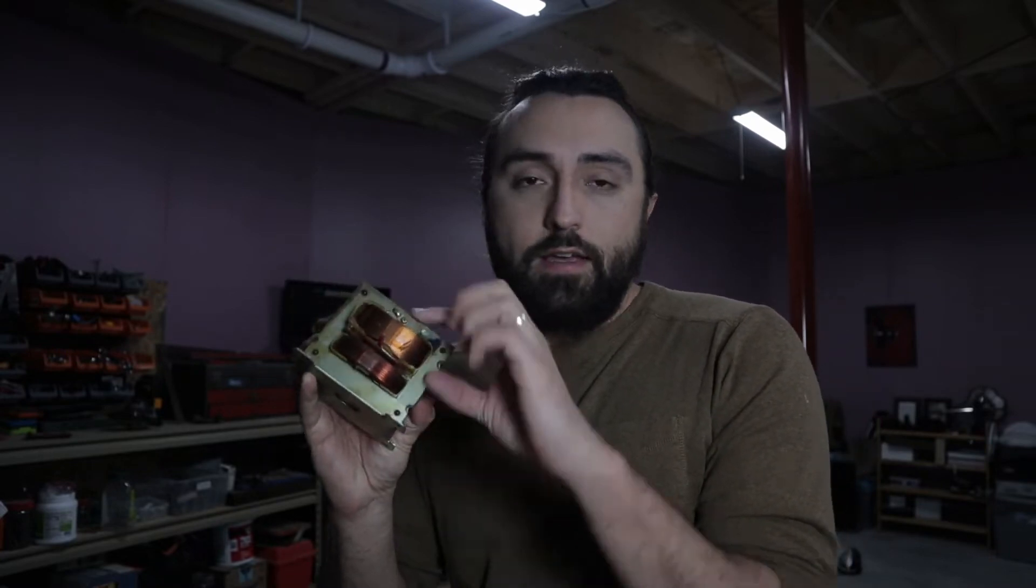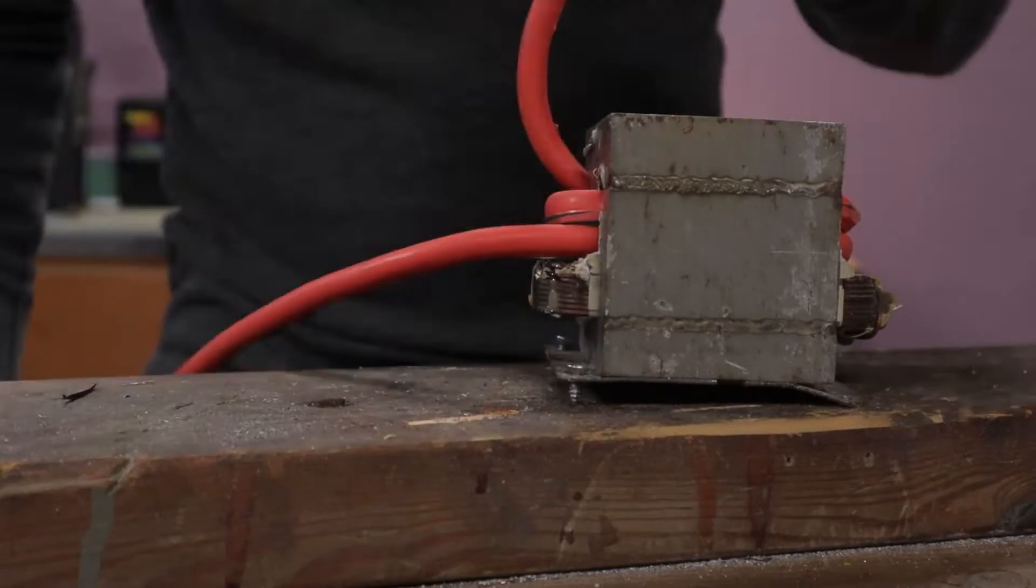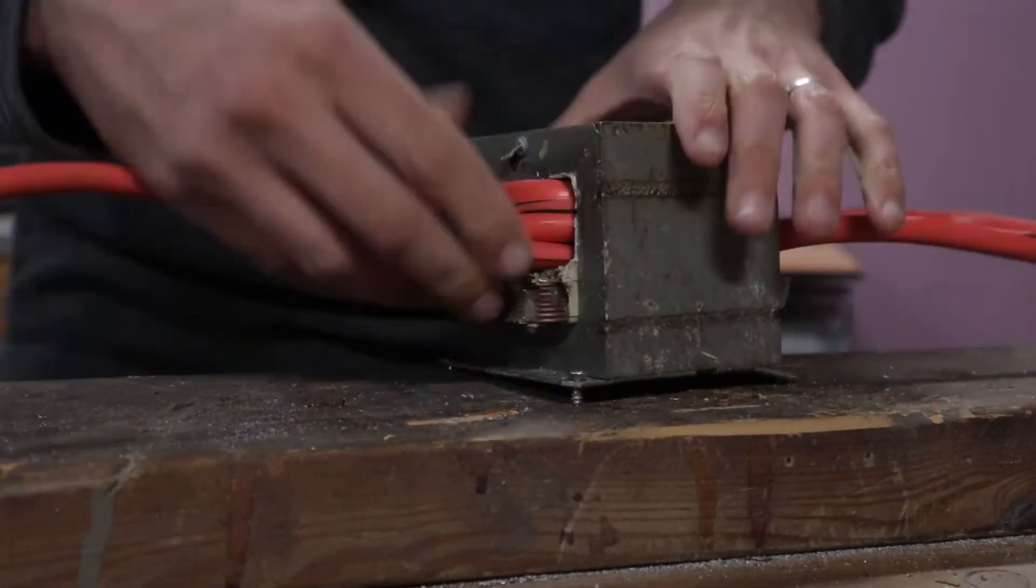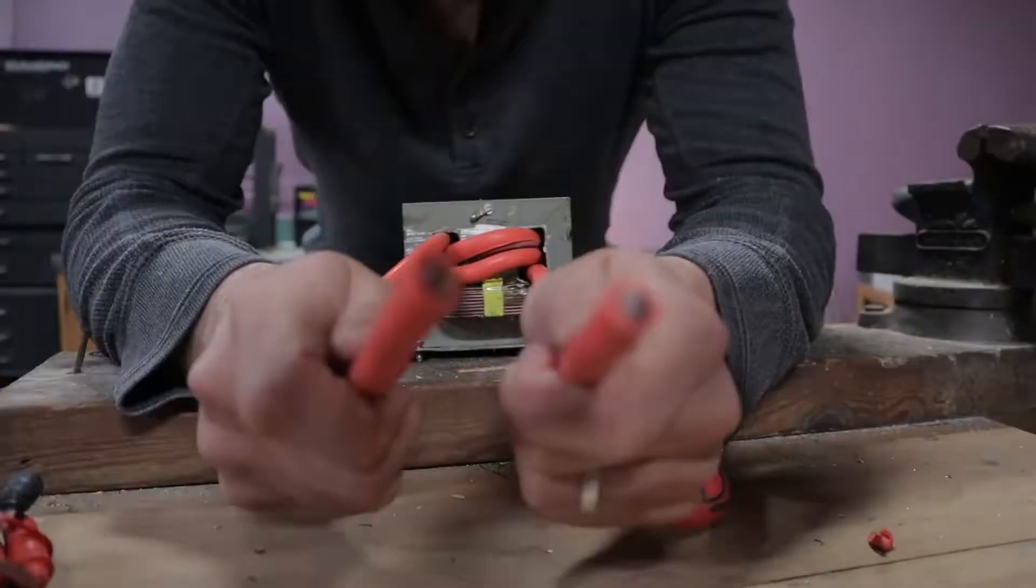So what I've done so far is I've taken this top coil out and replaced it with a higher gauge wire, just a four gauge jumper cable wire with less windings. And what that's going to do is, instead of making it high voltage and low current, we're going to go low voltage and high current, which you can use to melt metal.